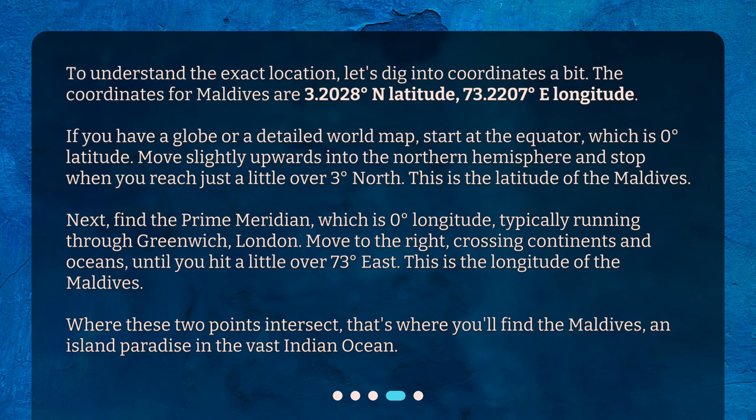Next, find the prime meridian, which is 0 degrees longitude, typically running through Greenwich, London. Move to the right, crossing continents and oceans, until you hit a little over 73 degrees east. This is the longitude of the Maldives. Where these two points intersect, that's where you'll find the Maldives — an island paradise in the vast Indian Ocean.